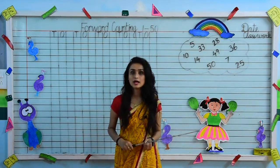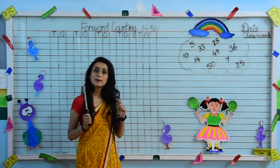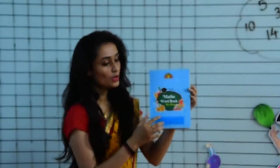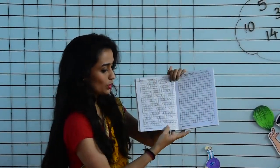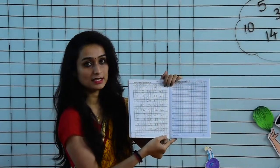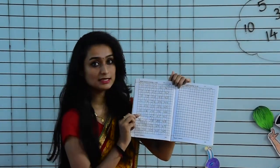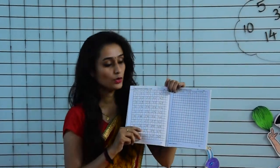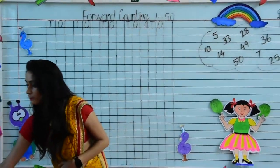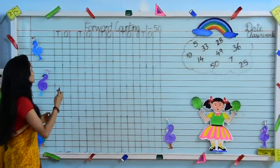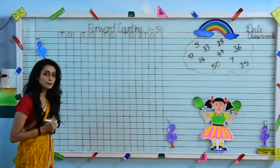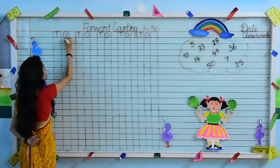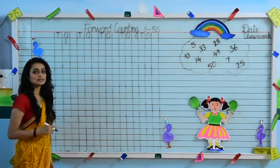Now we will see how to write forward counting 1 to 50 in our maths workbook. So take out your maths workbook and open page number 26. Do not forget to mention the date and the class work on the top. Take out your pencil and come on the first block. The digit starts with 1. Let's write 1 — a standing line makes it 1.